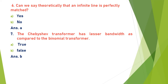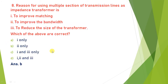Next: the Chebyshev transformer has lesser bandwidth compared to a binomial transformer — true or false? The binomial transformer has very less bandwidth compared to Chebyshev. That means the Chebyshev transformer has higher bandwidth than the binomial transformer. So the given statement is false — wait, the answer given is (a) true that Chebyshev has more bandwidth, meaning the stated comparison is incorrect.